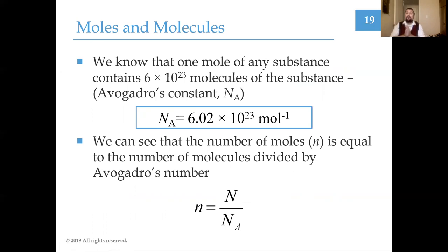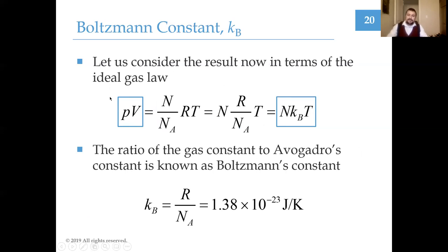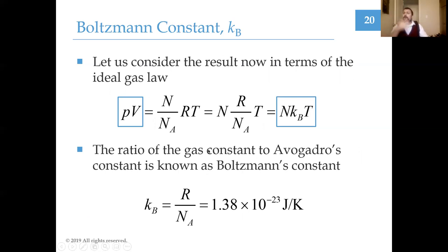By definition, one mole of a substance contains Avogadro's number of molecules. The total number of moles equals the number of molecules divided by Avogadro's number. This lets us make substitutions in the ideal gas law: PV = NRT can be written with the number of molecules divided by Avogadro's number, and rolling the gas constant divided by Avogadro's number together gives us the Boltzmann constant. Both expressions — in terms of moles or molecules — are completely equivalent.